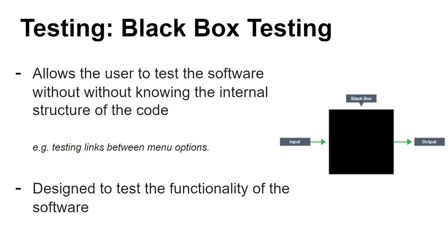Runtime errors are errors in the code that you only discover when you run the program. There are no issues with the actual code or logic, but whenever you run the program it throws an error. It might be an index out of range exception in an array where you try to add a value to a position that doesn't exist, or maybe it can't find a file it's writing to or reading from. You will only discover these issues when the program is in operation.